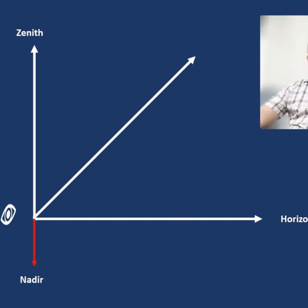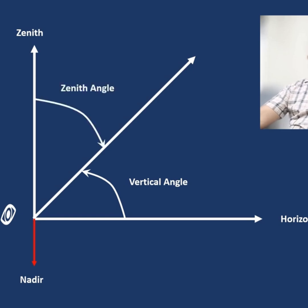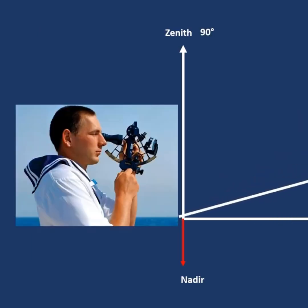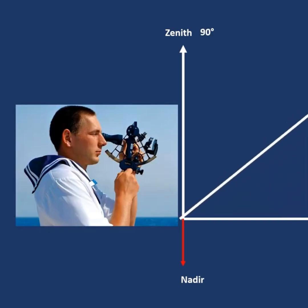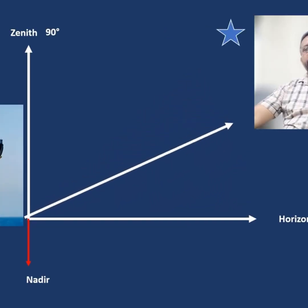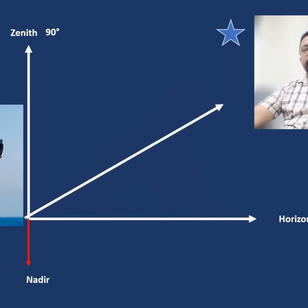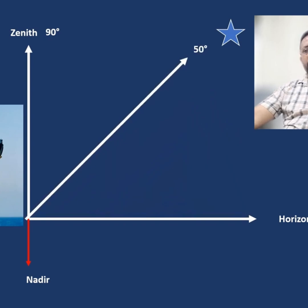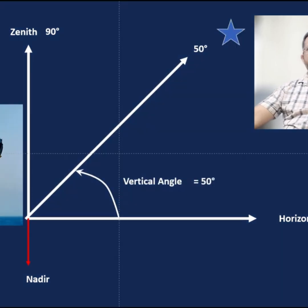The vertical angle is measured from the horizon and the zenith angle is measured from the zenith. When you are observing with a sextant, you are measuring the angle with reference to the horizon — the horizon is 0 degrees and your zenith is 90 degrees.